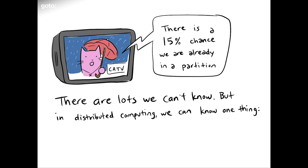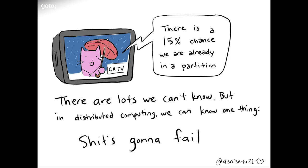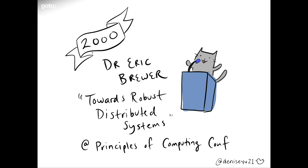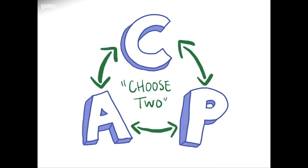There are a lot of things we're never going to be able to know, but we can know one thing: things are just going to fail — which brings us to the CAP theorem. The CAP theorem dropped, like a mixtape, in 2000, when Dr. Eric Weaver gave a keynote talk at the Principles of Computing Conference. All over the internet, people conceptualize CAP as: you have these three things, pick two — which means you can just will one of them out of existence.